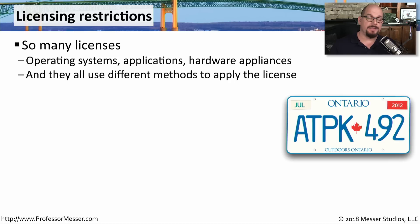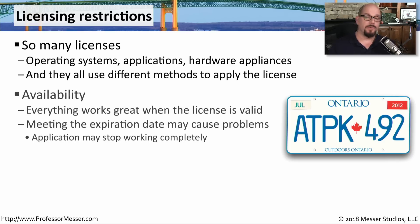If you've ever had to maintain a set of licenses in your organization, you know this can be a challenge. There may be separate licensing for operating systems, applications, or individual pieces of hardware, and each type of service has a completely different method of performing licensing. One reason to keep licenses up to date is that you could run into availability problems if a license expires — some applications will work normally until the expiration date, then stop working entirely, while others may work with a subset of functionality. So you want to document and have a process available for updating those licenses.